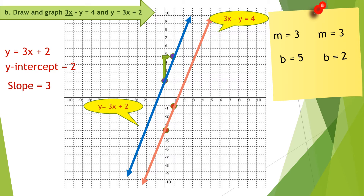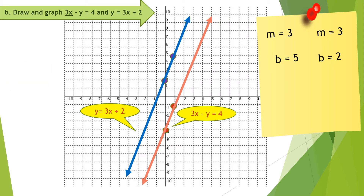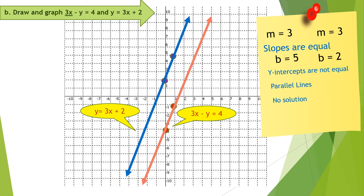Let us now define this type of system. The slopes here are equal and the y-intercepts are not equal. Since the two lines are parallel and will never intersect, that means there is no solution.